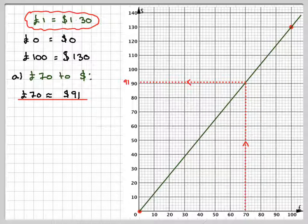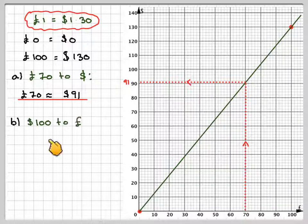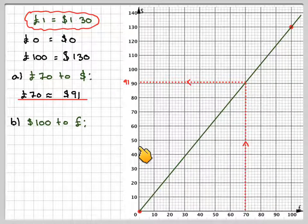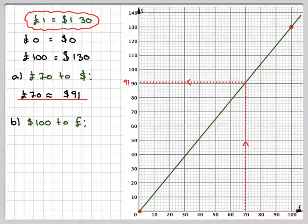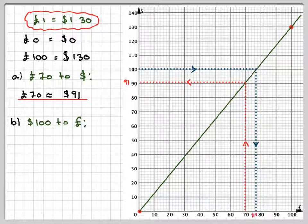And then to convert 100 dollars to pounds, you need to find 100 here, which is there, draw a line across to the line, and then read down.